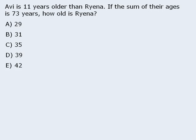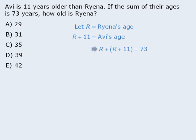For the question shown here, the approach we learned in school would have us assign a variable to one age, and then use this to assign an expression to the other age. From here we can write an equation, which we can solve for r. This of course is a valid approach. However, there will be times when the traditional approach is the slower approach.